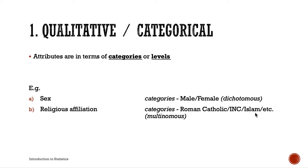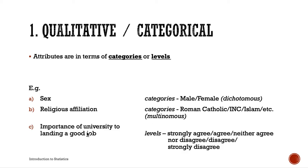Another example is religious affiliation, with categories like Roman Catholic, INC, Islam, Baptist, and many more. We also have the importance of university education to landing a good job, which is expressed in levels: strongly agree, agree, neither agree nor disagree, disagree, and strongly disagree.